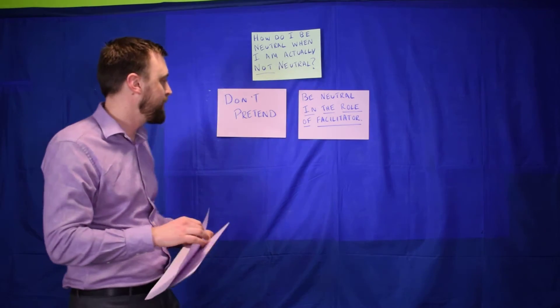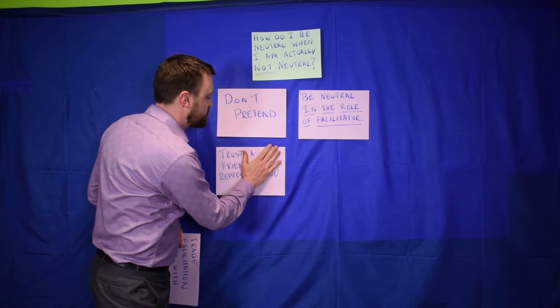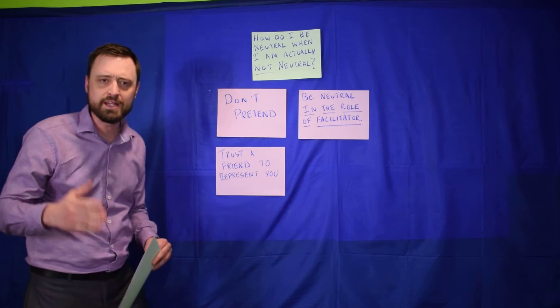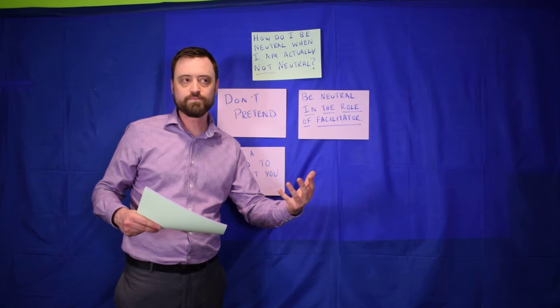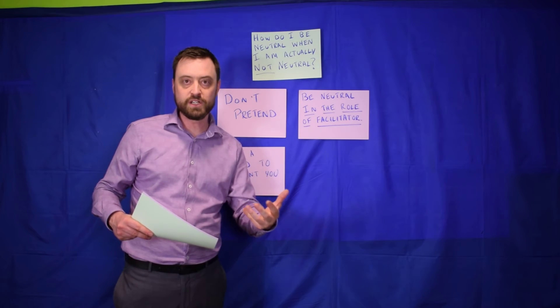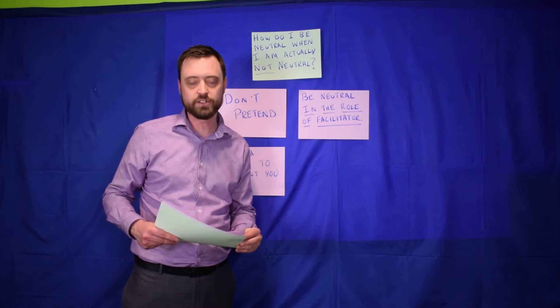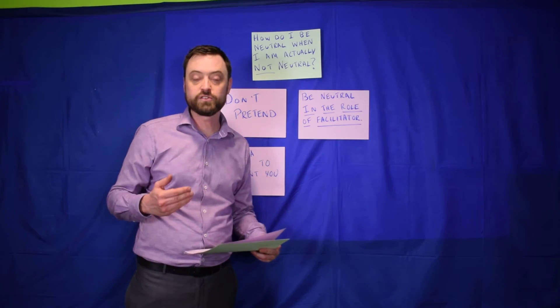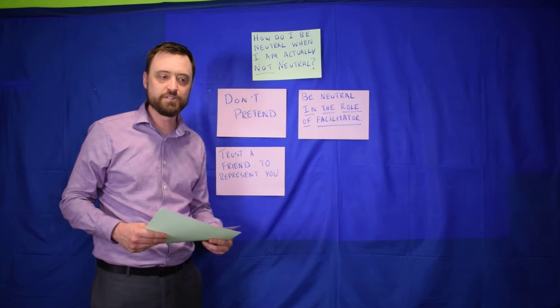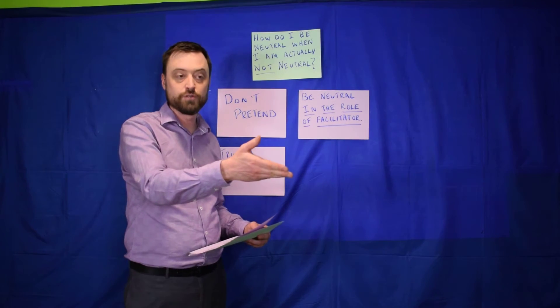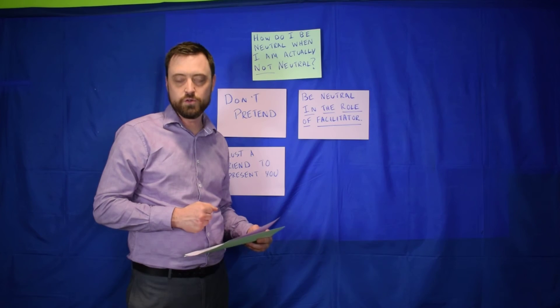Alright, so here's some other things that you might try doing. One thing is trusting a friend to represent you. What does that mean? I think that means that if you're working with the group and you also need to have some input into the content that they're discussing as well as the process, then you be the process person and you ask a friend, whoever it is, maybe your colleague, maybe a volunteer, to represent your views as well as their own, somebody who knows your views.